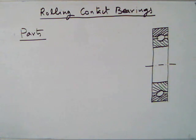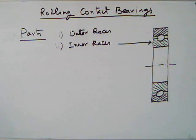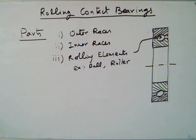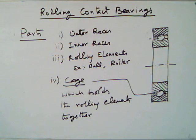Parts of rolling contact bearings. First one is outer races. Second one is inner races. Third one is rolling elements. Rolling elements may be balls or rollers — here in the figure, the balls are shown as rolling elements. Fourth one is cage, which holds the rolling elements together.